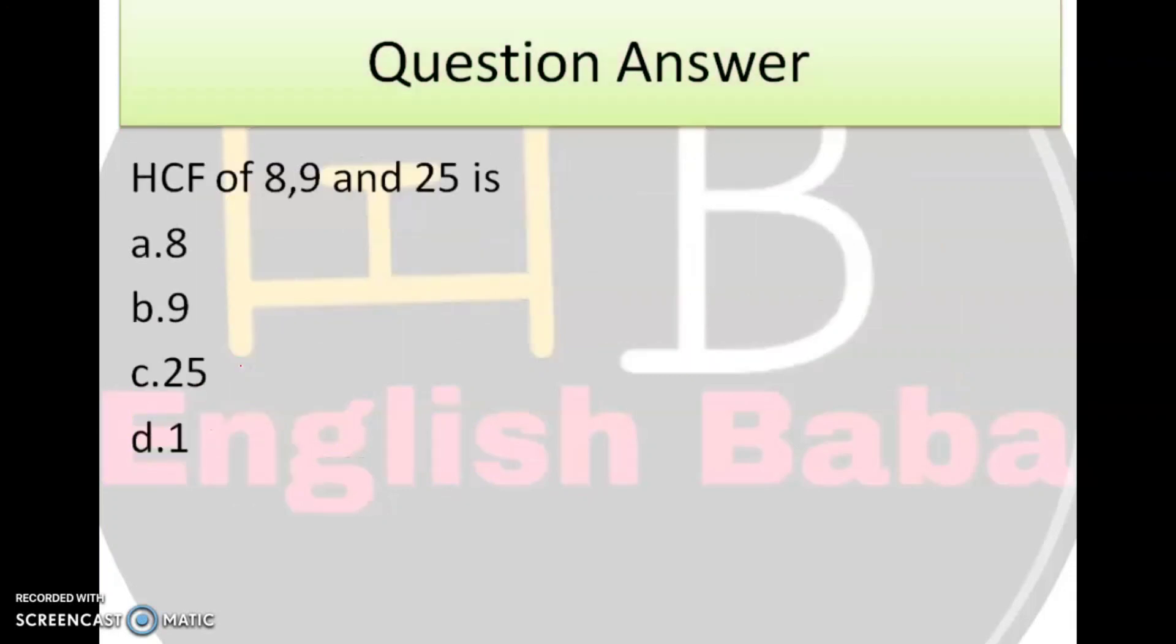Next question. HCF of 8, 9, and 25 is 8, 9, 25, ya 1. Hum 8 ka prime nikalenge, 9 ka prime nikalenge, 25 ka prime nikalenge. 8 ka aayega, hamare paas 2 cube, 9 ka 3 square, aur 25 ka 5 square. So, highest common factor is none other than 1.